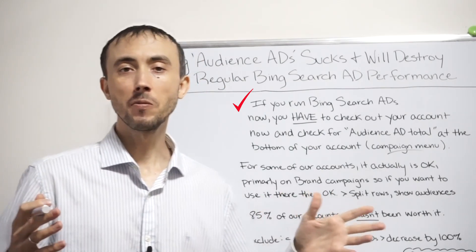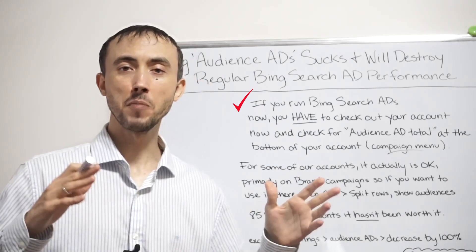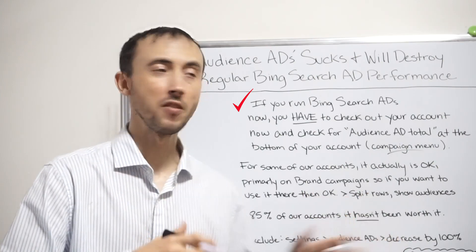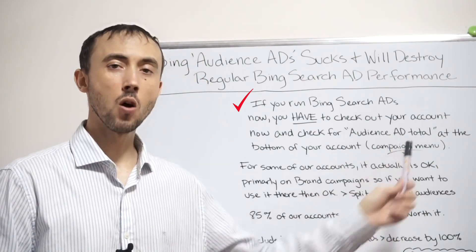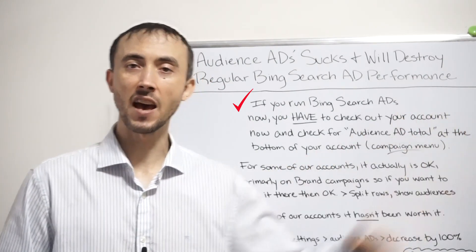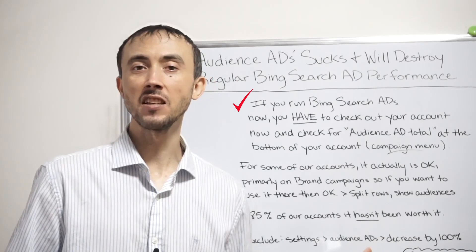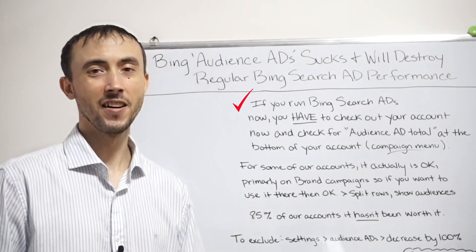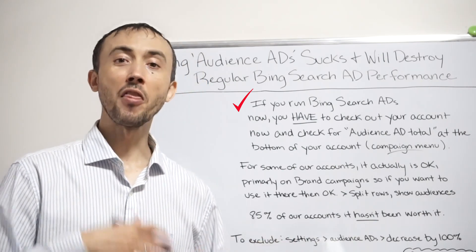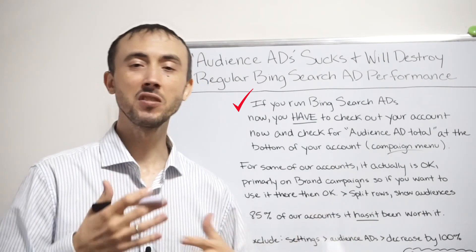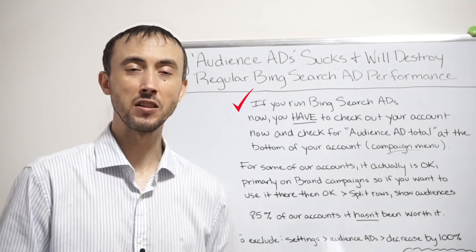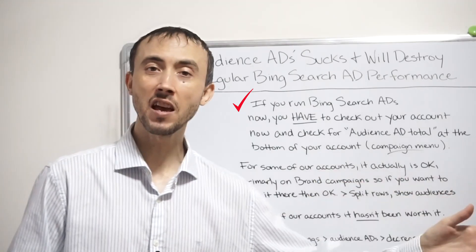We manage a bunch of different accounts at our PPC firm. I've seen accounts where half of the money was going to just the display ads under the "Audience Ad Total," which shows how much of your budget is going to audience ads — and of that, none of it was actually getting any sales. Most of the time it's between about 10% and a third, but we've seen accounts where literally half the budget is going there with no sales.